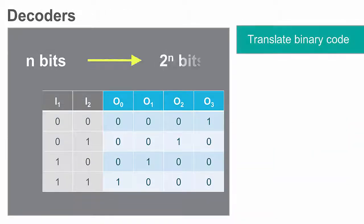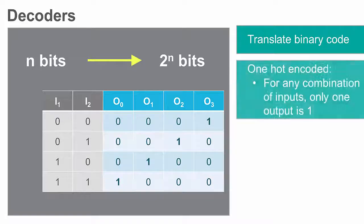Devices that are able to translate a binary code of n bits of information into a binary code of 2 to the n bits of information are known as decoders. Binary decoders are said to be one-hot encoded because, for any combination of input signals, there is only one output that can have a value of 1.